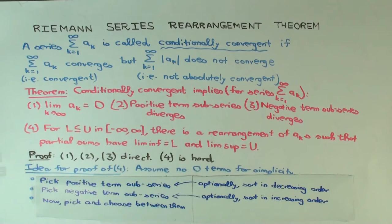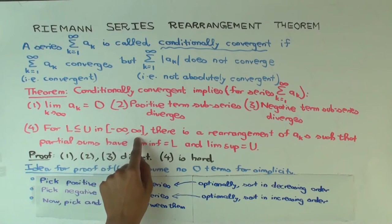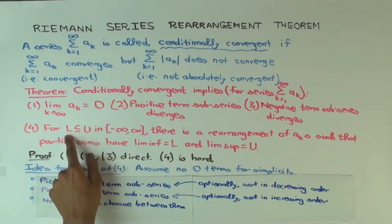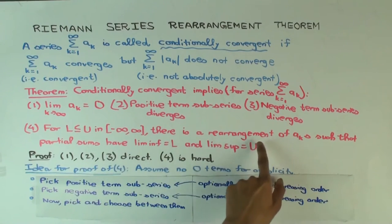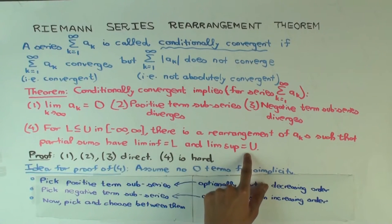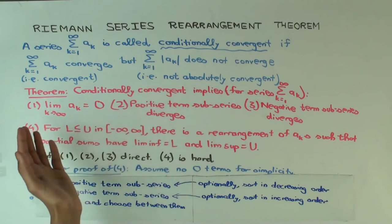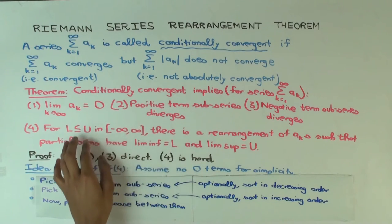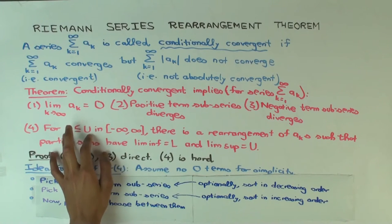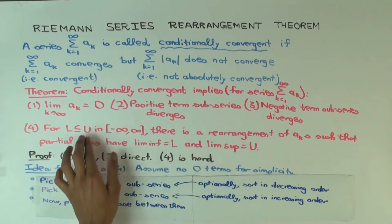The fourth property is a really interesting one. It says that if you have two values L and U — which could be real numbers, or negative infinity or infinity — where L ≤ U, then you can rearrange the series such that the partial sums have lim inf equal to L and lim sup equal to U. You can think of the lim inf as the lower sum and the lim sup as the upper sum.